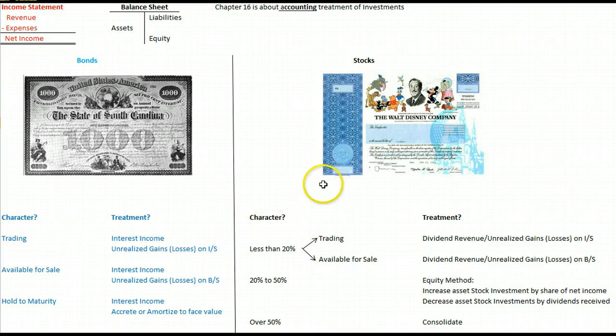We're going to book the dividend revenue for a trading stock just like we would for an available-for-sale. We're going to debit cash, credit dividend revenue.